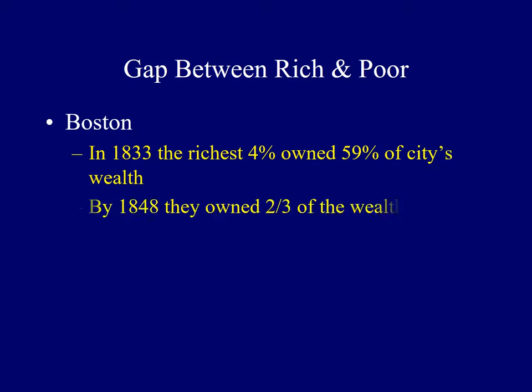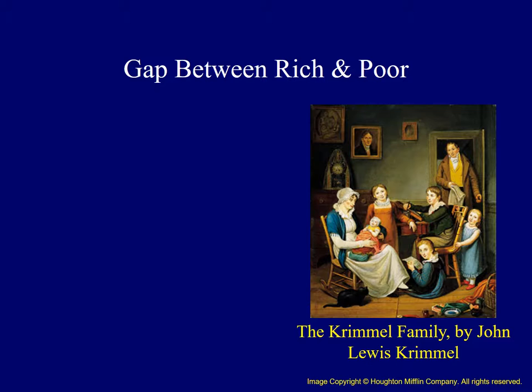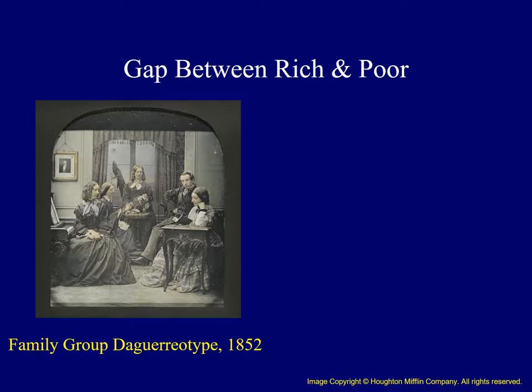Some statistics demonstrate the growing concentration of wealth in a small segment of society. In 1833, the richest 4% of Boston's residents owned 59% of the city's wealth; fifteen years later they owned about two-thirds. In 1828, the richest 4% of New York's population controlled about half the city's wealth, and by 1848 they owned two-thirds. John Lewis Crimmel painted a portrait of himself and his sister-in-law with her children around 1812, showing a prosperous middle-class German family living in Philadelphia. Another image shows a prosperous family from about 30 years later, indicating the increased standard of living seen by many wealthy Americans.